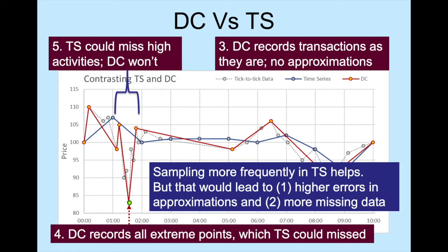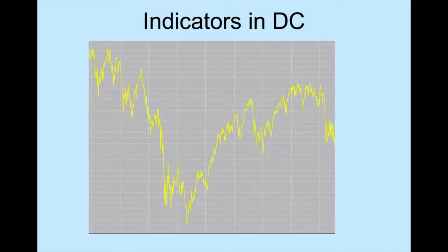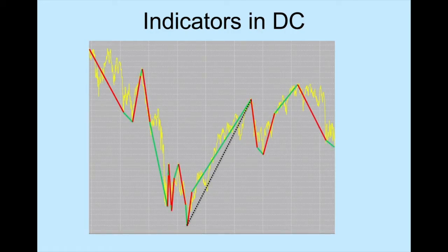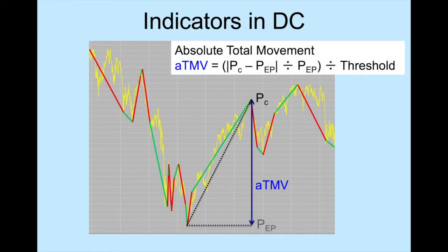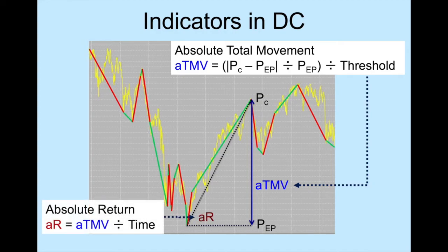Before we carry on, we need to introduce two indicators in directional change. For every trend, one could calculate the absolute price movement, ATMV, which is the percentage price change normalized by the threshold. We can also measure the return of each trend, AR. We shall see how these two indicators could help us monitor the market for useful information.